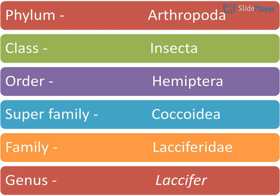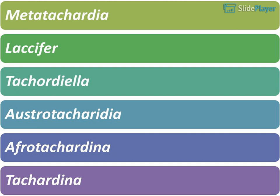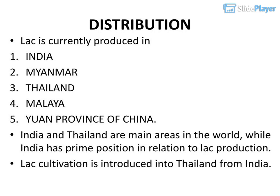The other name given to it has been Keriolakakur. Its taxonomic classification is: Phylum Anthropoda, Class Insecta, Order Hemitra, Superfamily Coccoidea, Family Laksifridae, Genus Laksifra, with genera including Metatarshadia, Laksifra, Tachordiella, Ostrotachoridia, Aphrotachidina, and Tachidina.